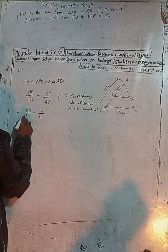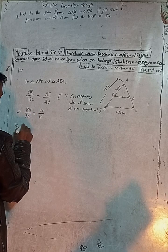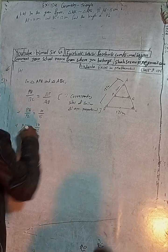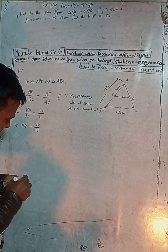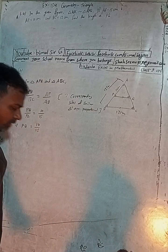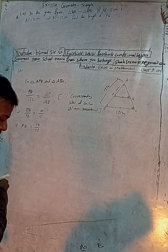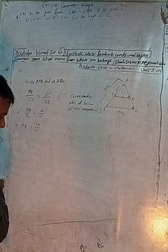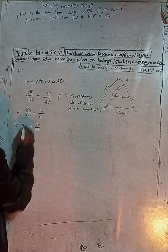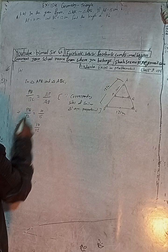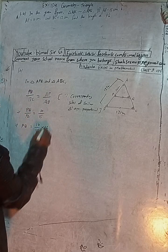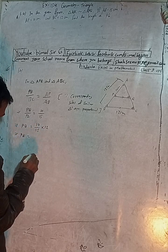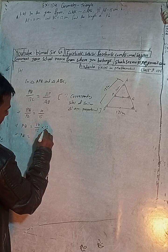Now cross multiply. PQ equals 10 over 15, multiplied by 2. So PQ equals 2 multiplied by 10, divided by 15. Simplifying: the LCM of 12 is 2 × 6 = 2 × 3, and 15 = 3 × 5. Cancel the 3 from both, leaving 4 and 5.